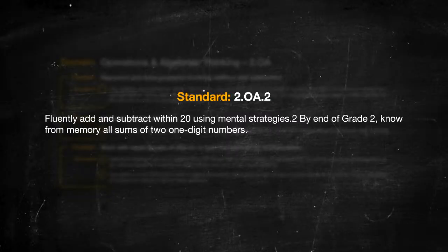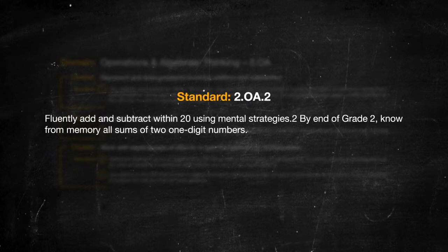Now on to standard OA2. Students learn many strategies involving place value and properties of numbers to minimize the need for memorizing addition and subtraction facts within twenty. In second grade, students should become fluent with this skill. To be fluent means to be accurate, efficient, and flexible. Fluency is built with significant practice through oral drills, sprints, and other activities.